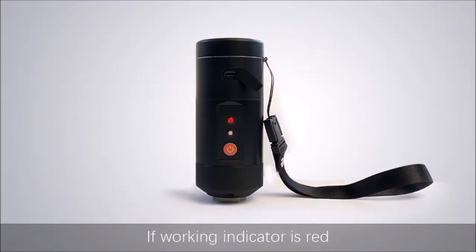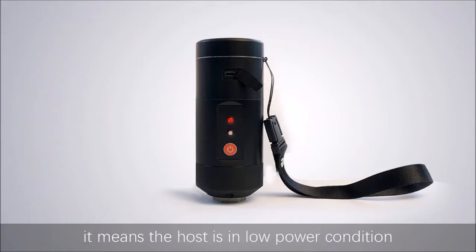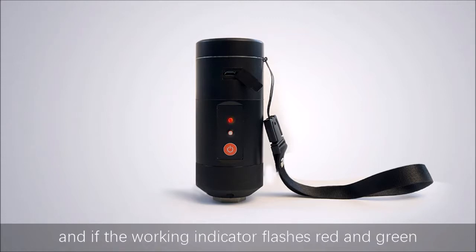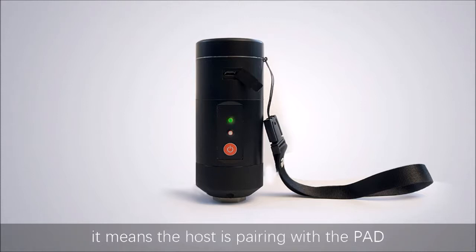It is red when charging and turns green when the host's battery is full. Above the charging indicator is the working indicator. If the working indicator is red, it means the host is in low power condition. If it's green, the host can work normally. If it flashes red and green, it means the host is pairing with the pad.